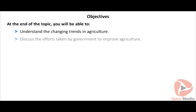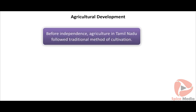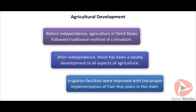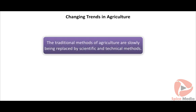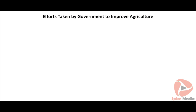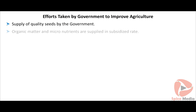At the end of the topic, you will be able to understand the changing trends in agriculture and discuss efforts taken by the government to improve agriculture. Before independence, agriculture in Tamil Nadu followed traditional methods. After independence, there has been steady development in all aspects, and irrigation facilities were improved with the proper implementation of five-year plans.